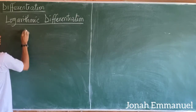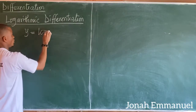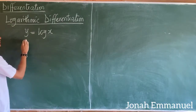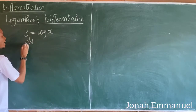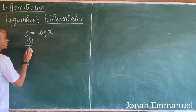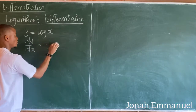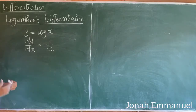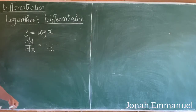An example: given that y is equal to log x, if I differentiate y with respect to x, dy over dx is equal to 1 over x. If I differentiate log x, I get 1 over x.